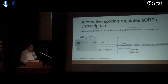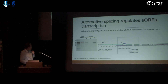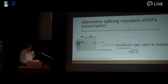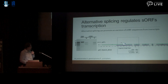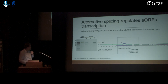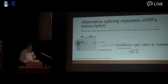Besides generating small interfering peptides, alternative splicing can also promote excision of sORFs from the transcriptome. We found examples where genes generate two isoforms, with sORFs located on one of the two isoforms. We used reverse transcription PCR to confirm transcription of sORF-containing isoforms, and found that this transcription can be tissue-specific. Alternative splicing may therefore regulate the sORF landscape in the transcriptome, and thereby regulate their translation.